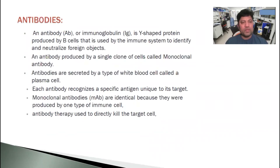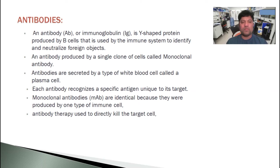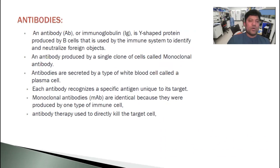Before moving forward, I would like to talk a little bit about antibodies. An antibody or immunoglobulin is a Y-shaped protein produced by the beta cells that is used by the immune system to identify and neutralize foreign objects. Foreign objects means toxins, chemicals, viruses — any kind of foreign body is considered as an antigen.